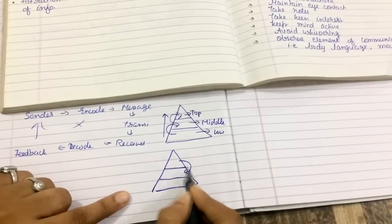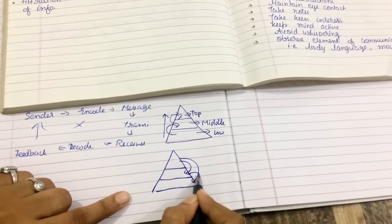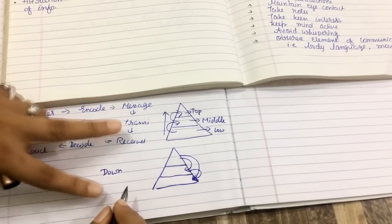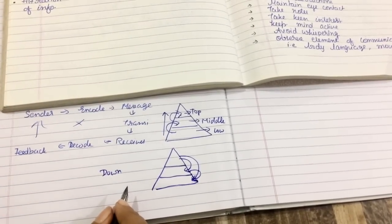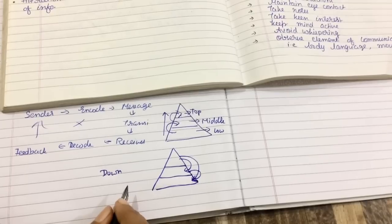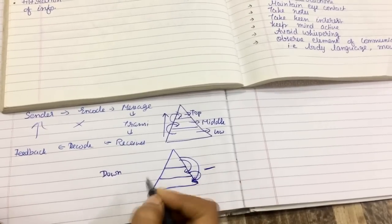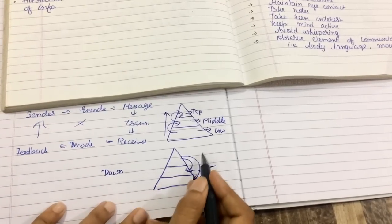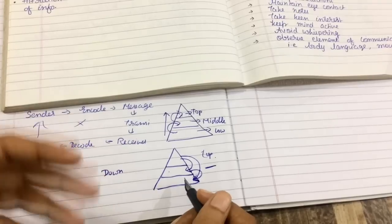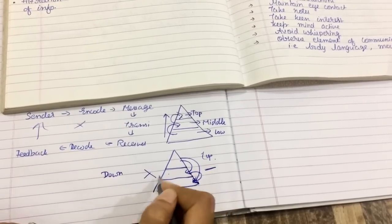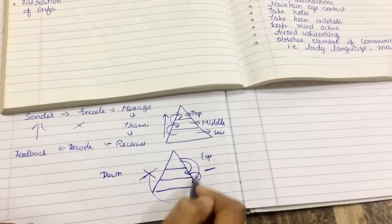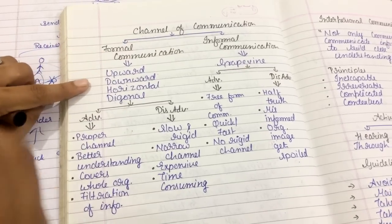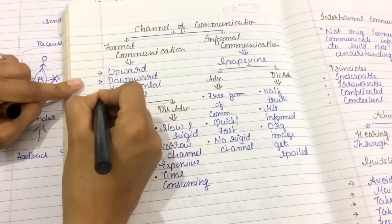Downward communication means when top level managers communicate to middle or low level managers, or middle level managers communicate to low level managers — that is downward communication. Horizontal communication means communication at the same level, such as two managers from different departments communicating with each other. Diagonal communication is when there is intercommunication between various departments or various levels of the organization.